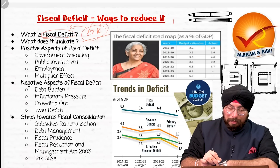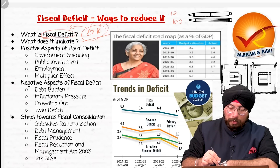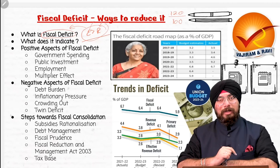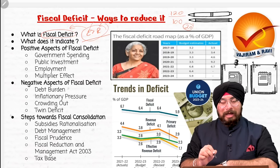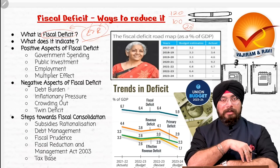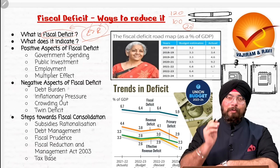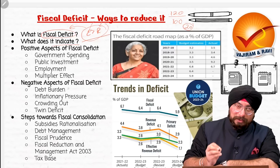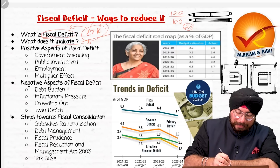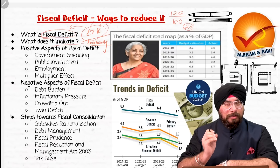For example, if I am receiving 100 rupees and I am spending 120 rupees, my expenditure is 120. That 20 rupees which I need to spend more, I need to borrow it from someone. So fiscal deficit indicates the level of borrowings the government needs to make — it indicates the level of borrowing or debt burden on the government.